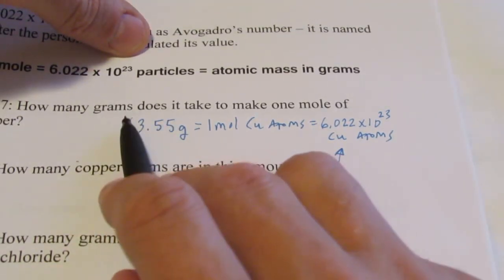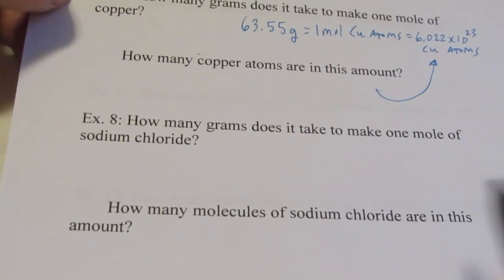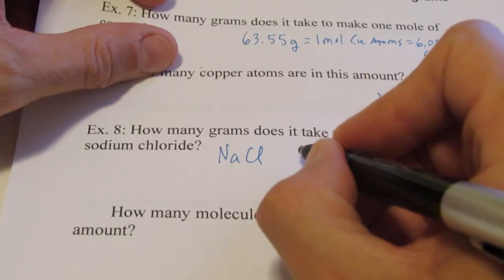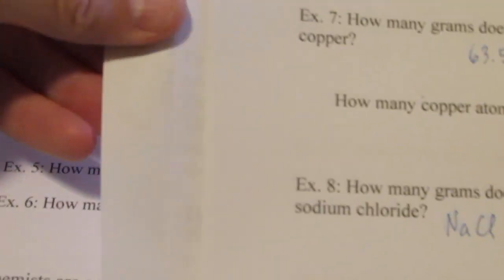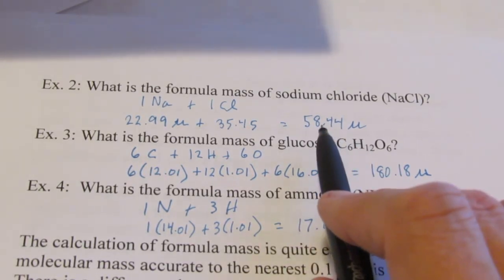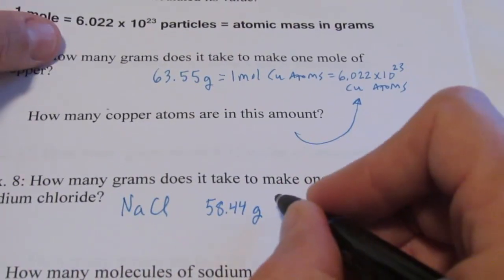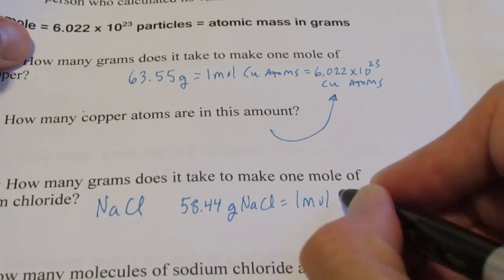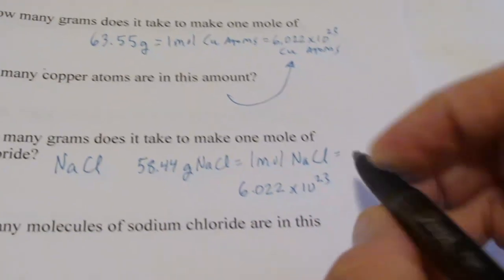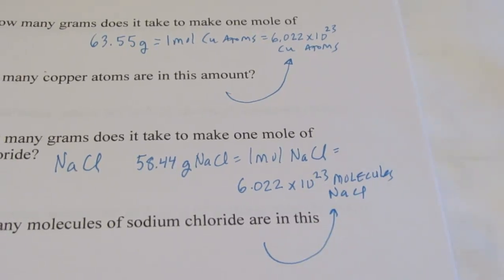What if I wanted to find out how many grams it takes to make one mole of sodium chloride? Recall from the previous example that sodium chloride's formula mass is 58.44 atomic mass units. So 58.44 grams of sodium chloride — table salt — would give me one mole of table salt, or 6.022 times 10 to the 23rd molecules of NaCl.